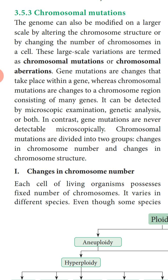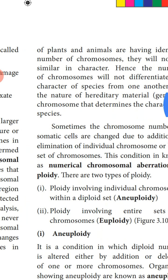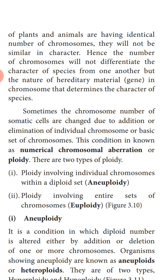Today we are going to study only about change in chromosome number. Each cell of a living organism possesses a fixed number of chromosomes, and we know all organisms have a fixed number of chromosomes — it varies in different species. Even though some plants and animals have identical numbers of chromosomes, they will not be similar in character. Hence the number of chromosomes will not differentiate the character of species from one another, but the nature of the hereditary material — the gene in the chromosome — determines the character of the species.